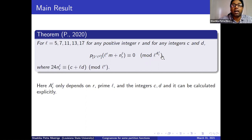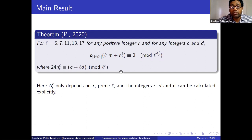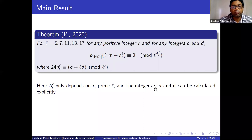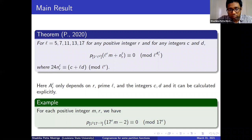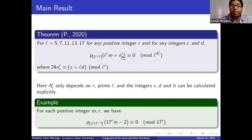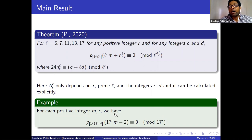This theorem is Lushen Wang's 2016 result. He proved three congruences for this partition function when L equals 11. In his paper — the second paper I read in grad school — he mentioned it's possible to obtain congruences for all C and D values, but he proved three congruences separately. My objective was to find a unified way to prove all congruences. We proved that result in 2019, and in 2020 we proved this result for all primes 5, 7, 11, 13, and 17. The number A_{R,L} tracks the highest power divisible by L, and it depends only on R, L, and these C and D values, and can be calculated explicitly.